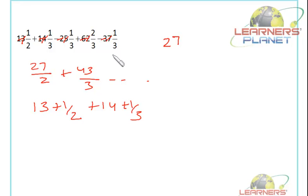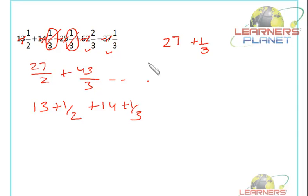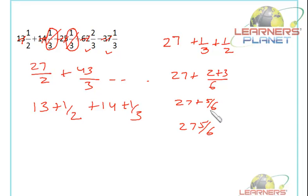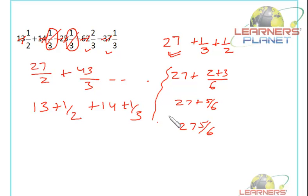Now I'll also observe the fractional part. Notice that positive 1/3 and negative 1/3 cancel each other. Similarly, positive 2/3 and negative 1/3 give positive 1/3. And we also have this half. So the fractional calculation is: taking LCM of 6, we get 2 + 3 over 6, which is 5/6. So the total is 27 + 5/6, which is 27⅚. In entrance examinations, if you are given options and only one is around 27, you can mark that directly. If there are more, this fractional calculation can even be done mentally.